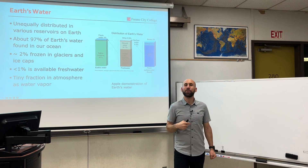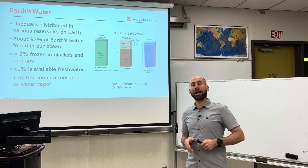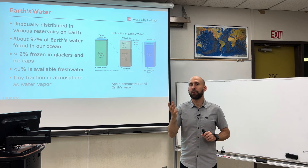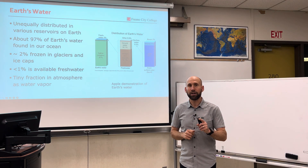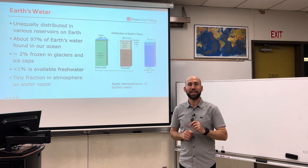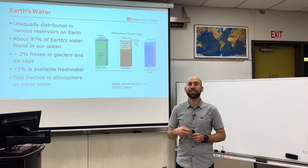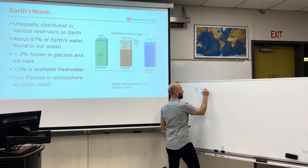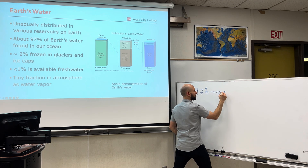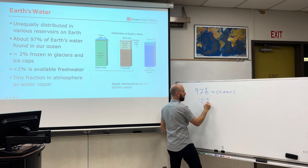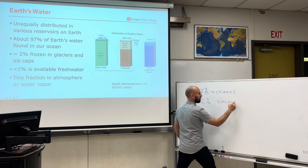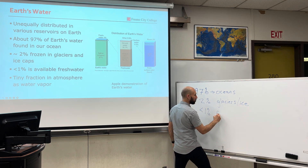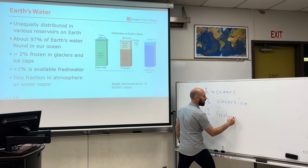Earth's water is unequally distributed across the world, and these are approximations — they're not pinpoint accurate — but for the most part, approximately 97% of earth's water is salt water in the oceans, and the other 3% is freshwater. Now, that 3% is not all available. About 2% is in glaciers and ice caps, so it's frozen. A little bit less than 1% is available fresh water.